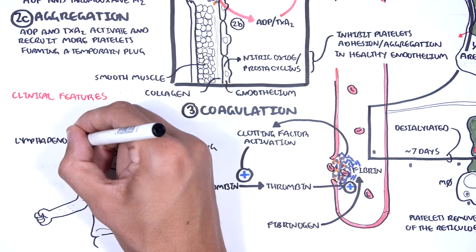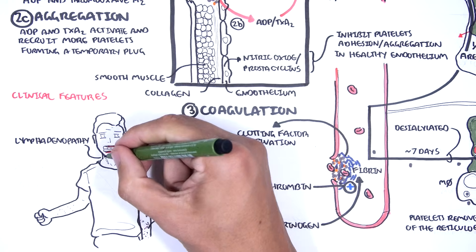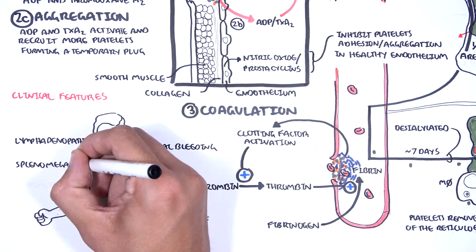Depending on the cause of the thrombocytopenia, you can have lymphadenopathy if the cause is infective, splenomegaly and hepatomegaly if there is portal hypertension or even malignancy.